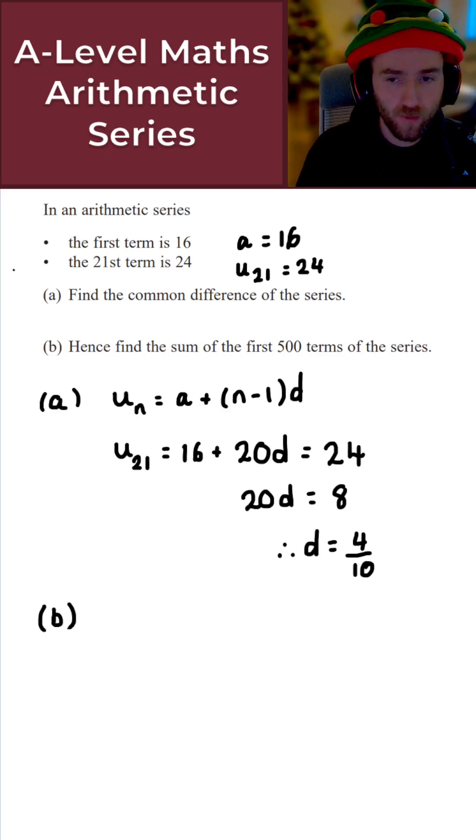Now for the final part of this question, part b, it just says hence find the sum of the first 500 terms of the series. So how do we do this? Well all we need to do is just use the formula for the sum of the first n terms of an arithmetic series.